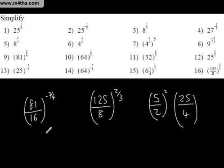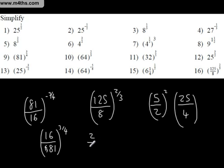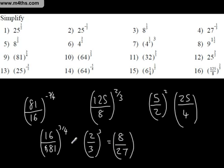It would be no different if we had 81 over 16 to the negative 3 over 4. Let's first turn it upside down: 16 over 81 to the positive 3 over 4. Let's take the fourth root of both. The fourth root of 16 is 2. The fourth root of 81 is 3. We then cube these, and we end up with 8 over 27. So, 81 over 16 to the negative 3 over 4 is the same as 16 over 81 to the positive 3 over 4, giving us 8 over 27.